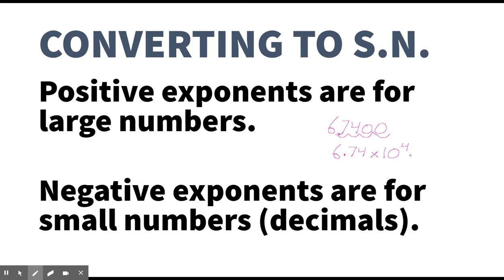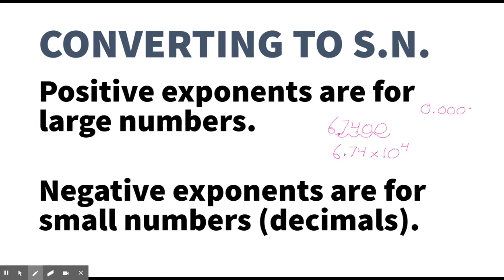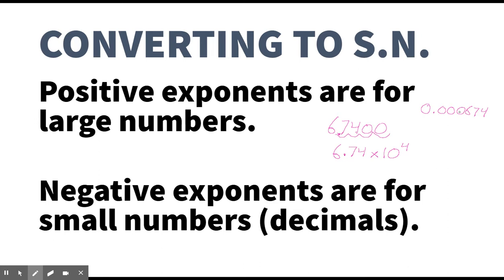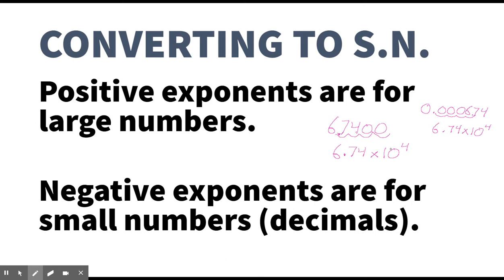Now, it is also possible to use a negative exponent. We would do that if, for example, this was 0.00674. To write this in scientific notation, again we put the decimal between the first two significant figures — right here. So we move it one, two, three, four places. The number becomes 6.74 times 10. We moved it four places, so we'd write a four as the exponent. But these are not the same number, so they cannot be written the same in scientific notation. What's different is that this would be a negative exponent — a negative four. So you use a negative number as the exponent when writing a decimal in scientific notation.